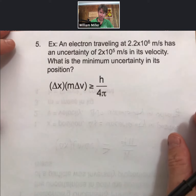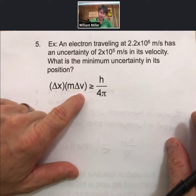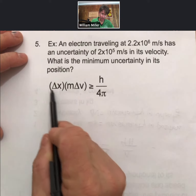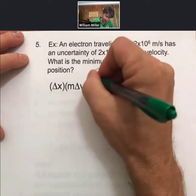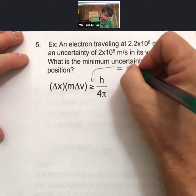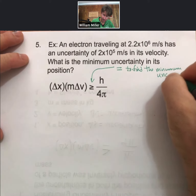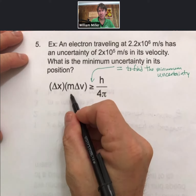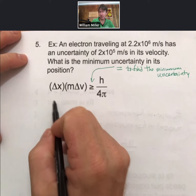Let's do a calculation. An electron traveling at 2.2 times 10 to the 6 meters per second has an uncertainty of 2 times 10 to the minus 5 meters per second in its velocity. What is the minimum uncertainty in its position? If you know one uncertainty, the other must be greater than or equal to a value. To find the minimum uncertainty, set the equation to an equal sign. We know the mass of an electron from our conversion sheet, and we've been given the uncertainty in velocity. We solve for delta x.